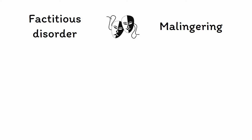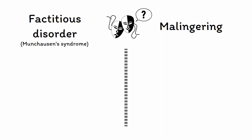Unlike all the somatoform disorders we've talked about so far, in which the symptoms and dysfunction are genuinely experienced by the patient, in these conditions the medically unexplained symptoms are intentionally feigned or exaggerated. This begs the obvious question: why would someone fake being sick? In factitious disorder, which was formerly known as Munchausen syndrome, the goal of faking illness is primary gain, which refers to all of the intangible benefits associated with being sick, such as sympathy and attention.